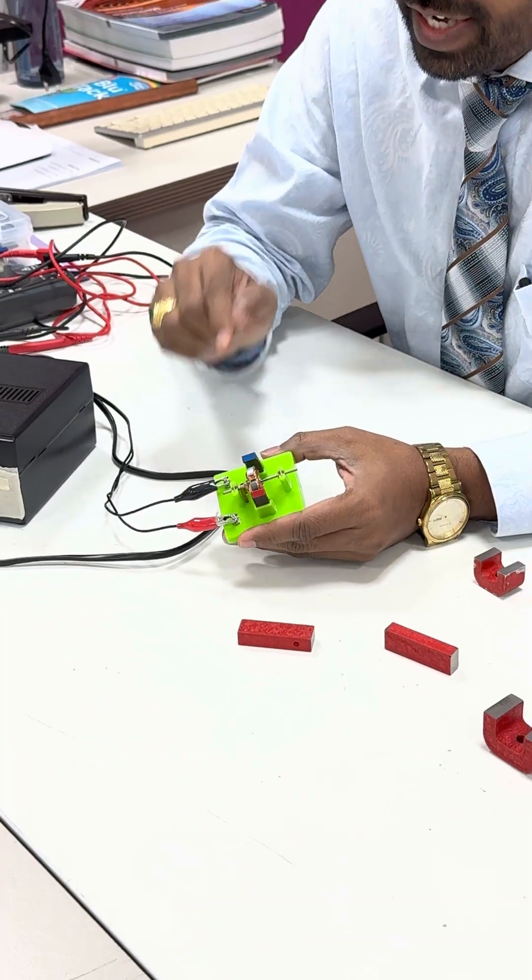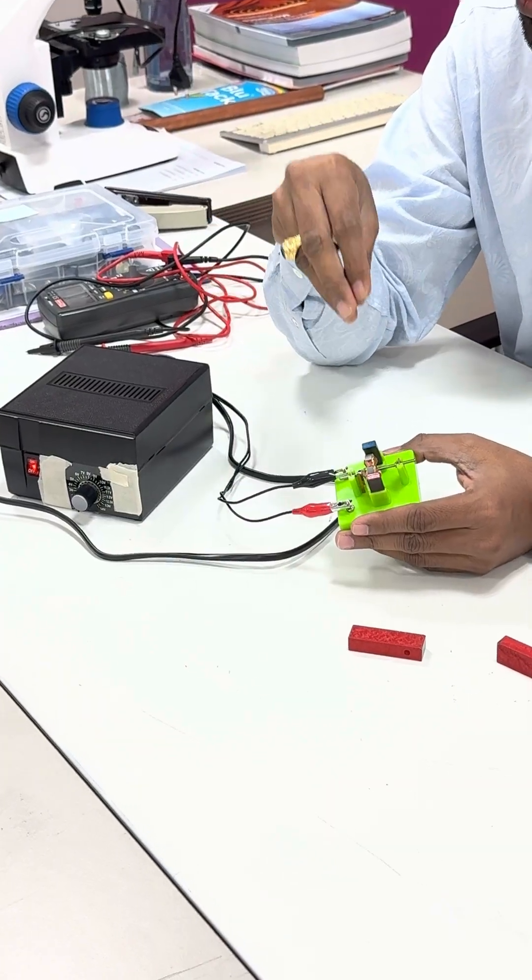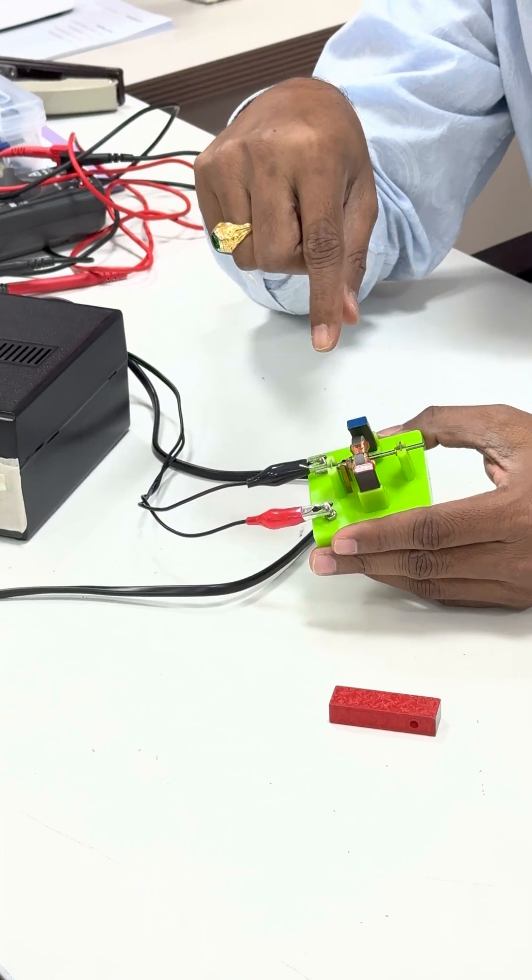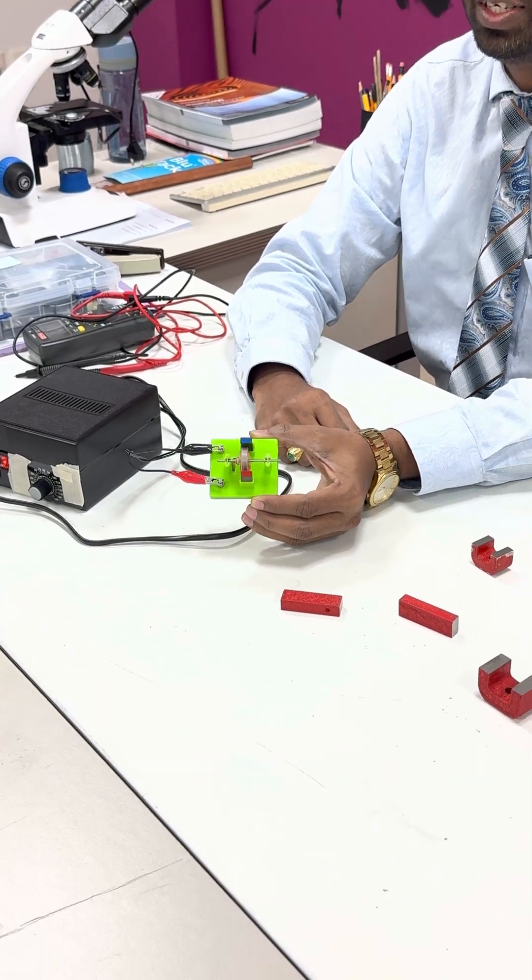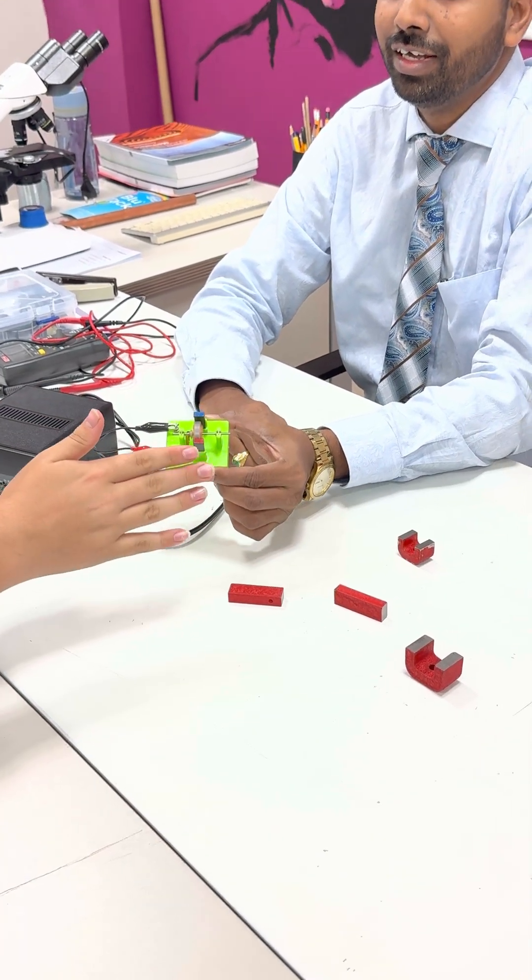See. So I kept the coil. When the current flowing coil is kept in a magnetic field, there will be a force because of which the coil rotates. Switch. Yeah, it's rotating. It's very simple.